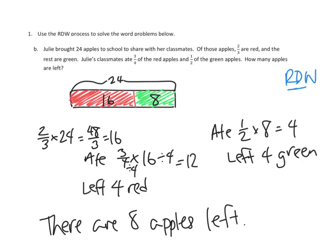So, this is not a bad problem. We managed to break this down into a pretty simple tape diagram, right? 24 broken down into red and green apples. Then we did some really simple multiplying by fractions, right? Two-thirds of 24, one-half of 8. That is not hard stuff.